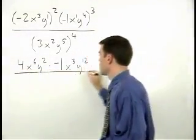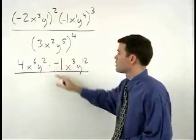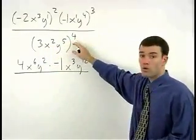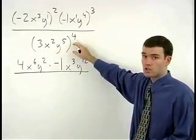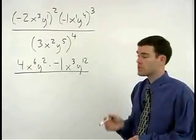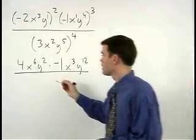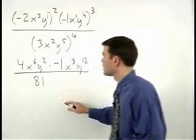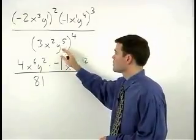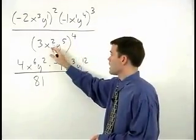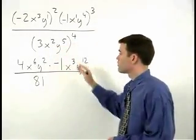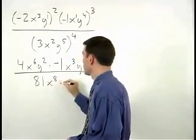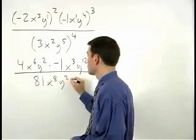In our denominator, we take our coefficient of 3 to the fourth power, which is 3 times 3 times 3 times 3, or 81, and multiply each of the exponents by 4 to get x to the eighth y to the 20th.